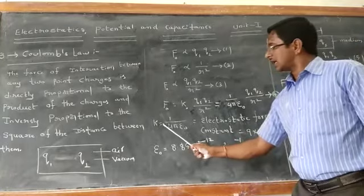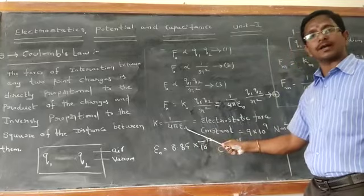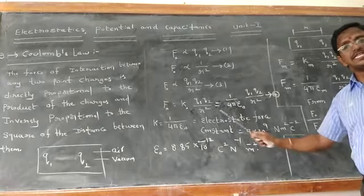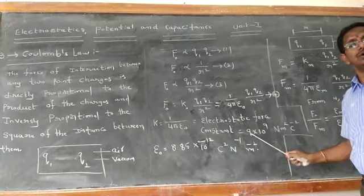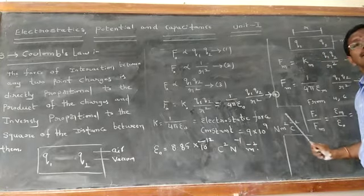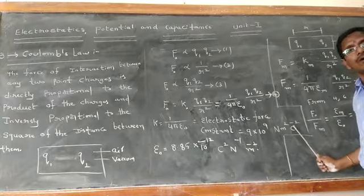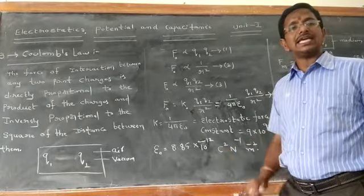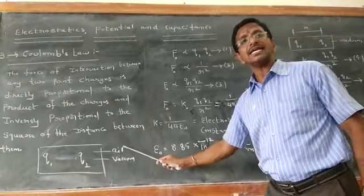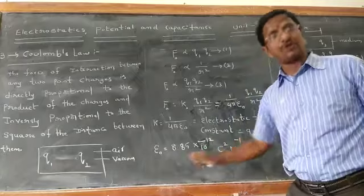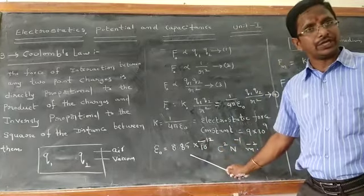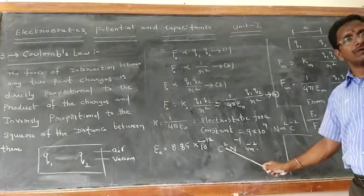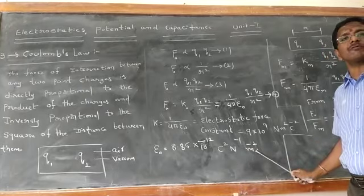K₀ equals 1 over 4πε₀, with units of Newton meter squared per coulomb squared, where ε₀ is the permittivity of free space, air, or vacuum. Its value is 8.85 × 10⁻¹² coulomb squared Newton⁻¹ meter⁻².